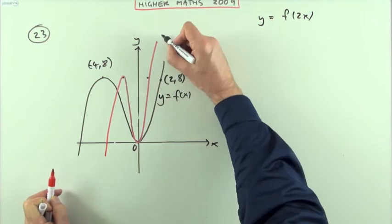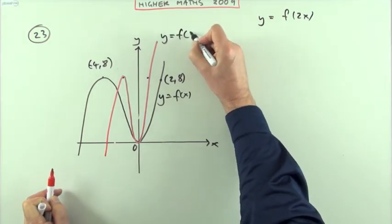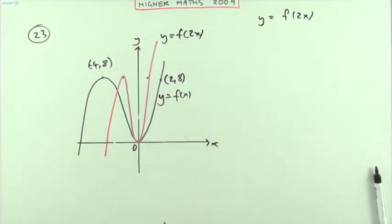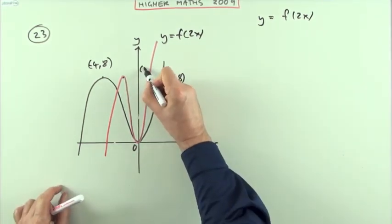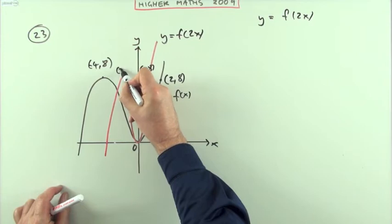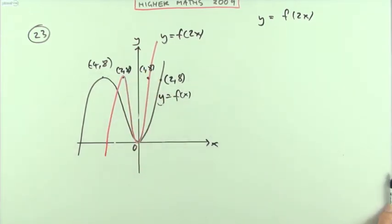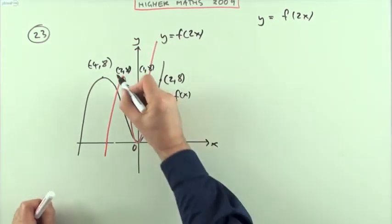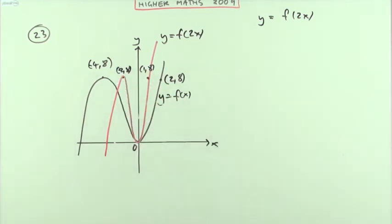That would be the graph of y equals f of 2x. I'll just put those points in again. That would be 1, 8 and that would be 2, 8. Negative 2, 8.